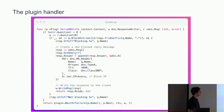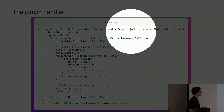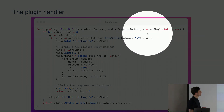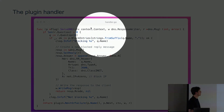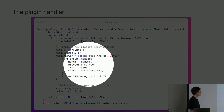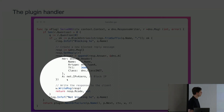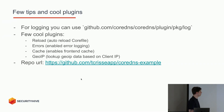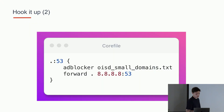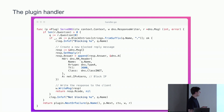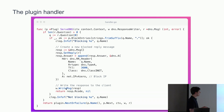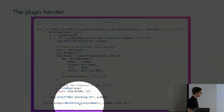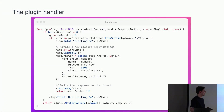Now we need to implement the plugin.Handler interface. Going from top to bottom: you receive a W for the response writer back to the client, and R for the DNS message the client sent. In this example we pick the first question — so from the previous dig command it would be google.com — then we look it up in our map. If it is found, we send back a reply in which we set the A record to 0.0.0.0. We write it back to the client and return our response code. If it is not in the map, we hand it over to the next plugin, maintaining the chaining mechanism.